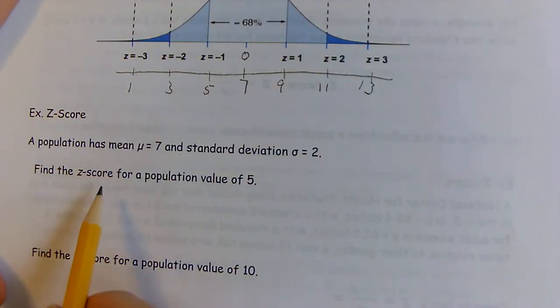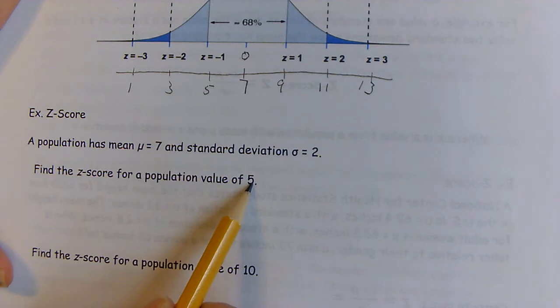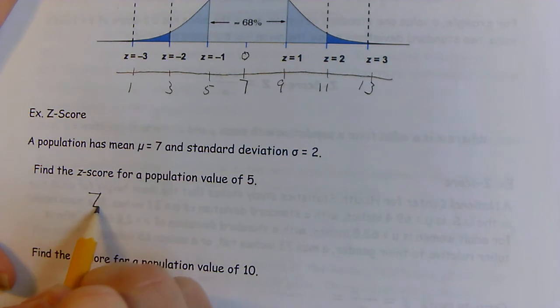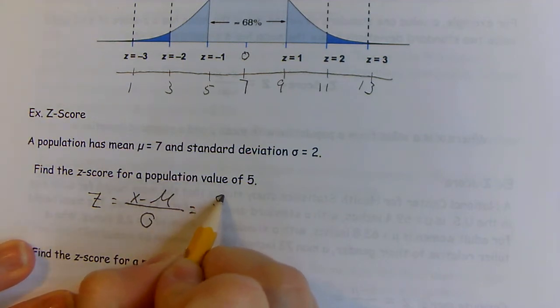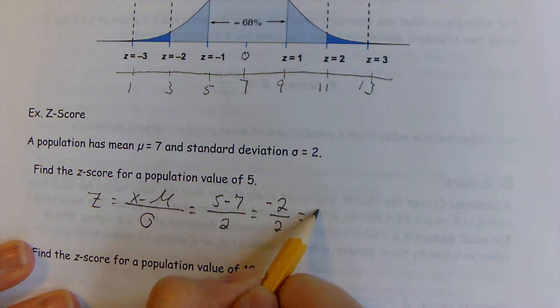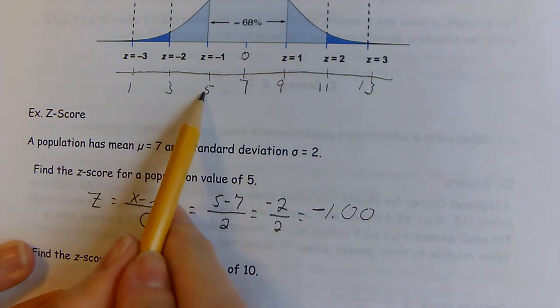Now we're going to use the z-score for this population value of 5. It's going to be negative one, exactly one below. So 5 subtract the mean of 7 divided by the standard deviation of 2 is negative two over two. Five is exactly one standard deviation below the mean for this data set.